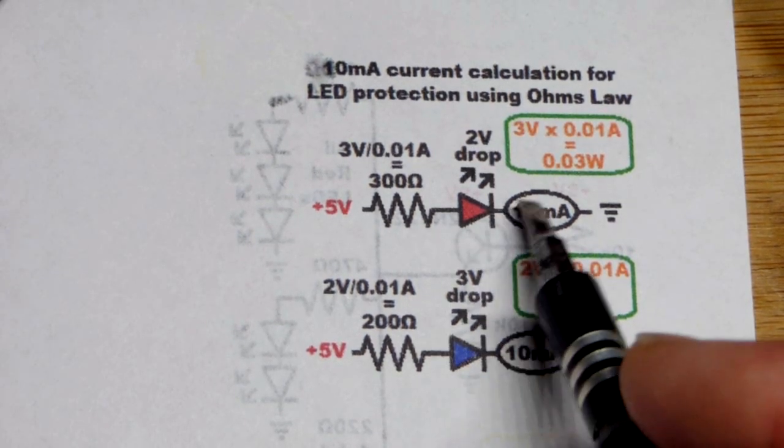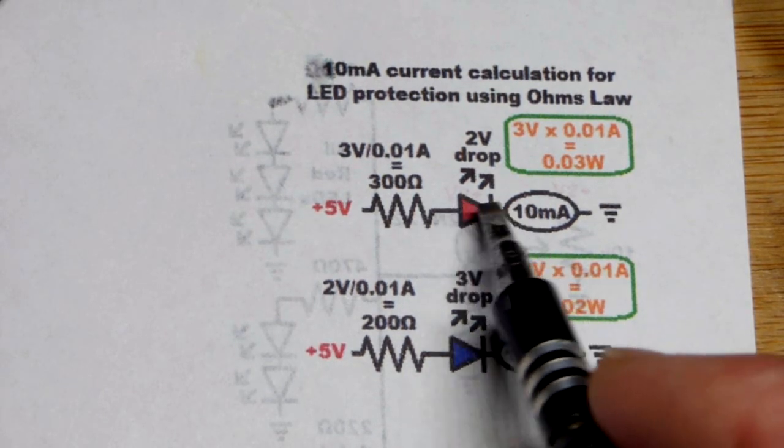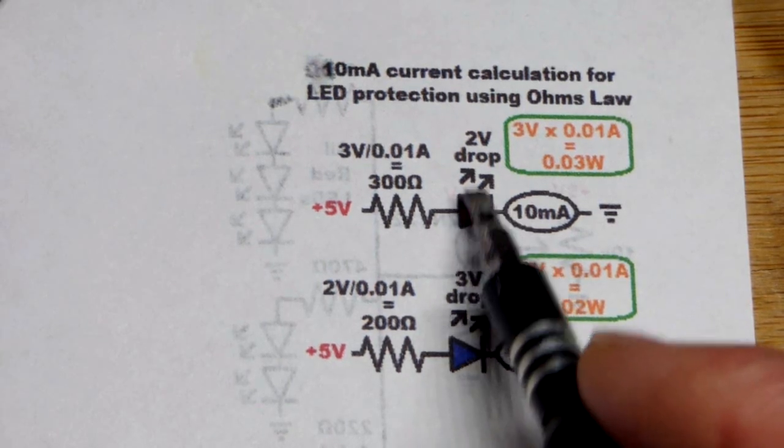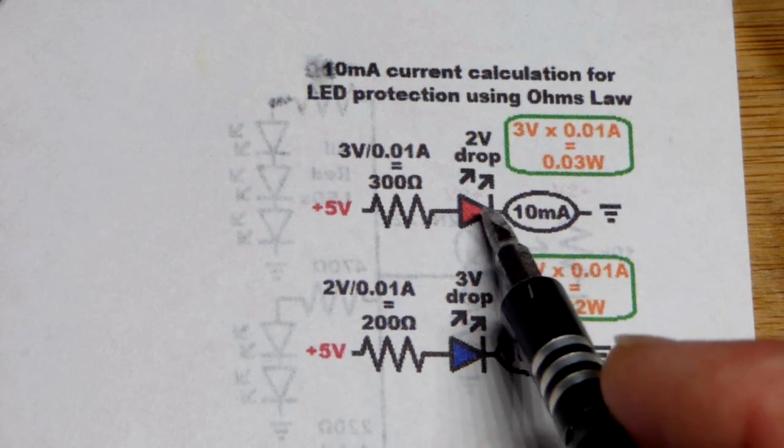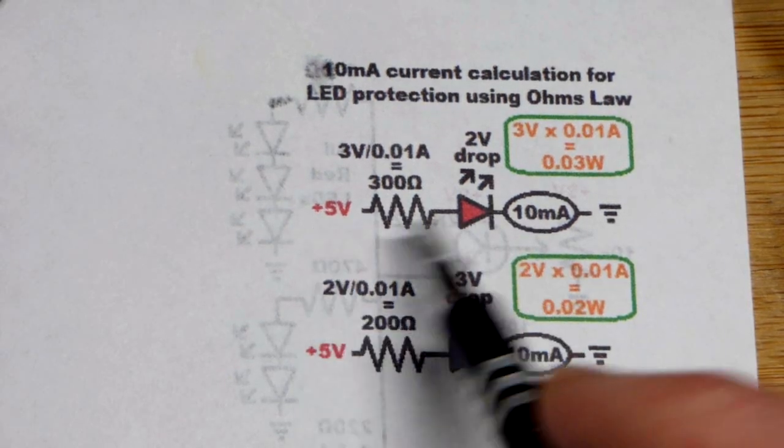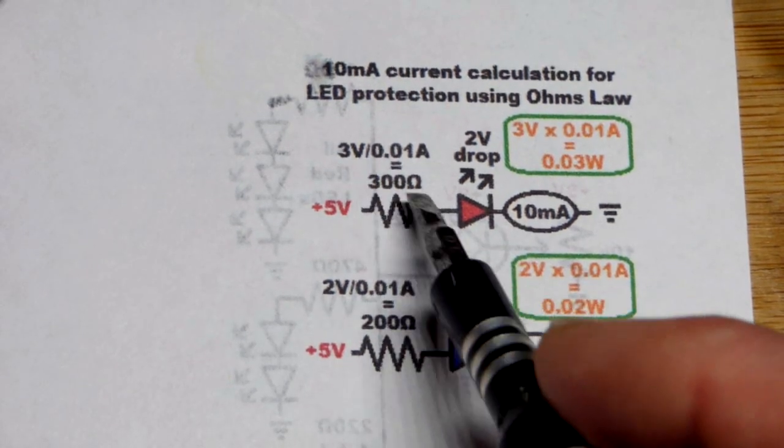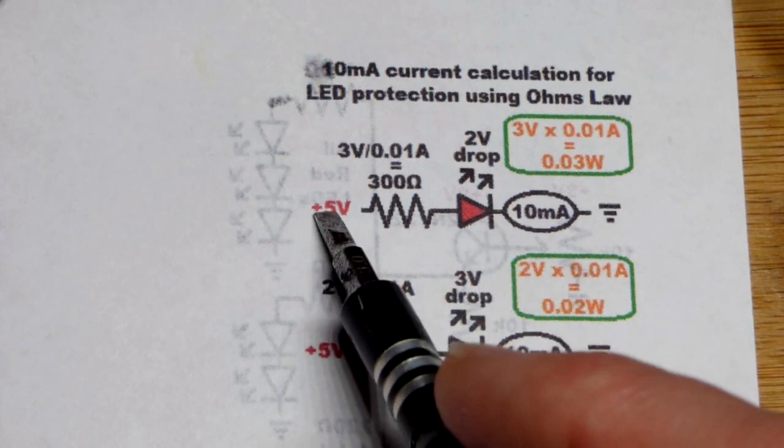As current goes up, it builds up about 2 volts across it. So it's building up that 2 volts. That means that voltage out of the supply voltage is dropped when it comes to the resistor. So we end up with 3 volts across the resistor that is in series with the red LED being powered by 5 volts.